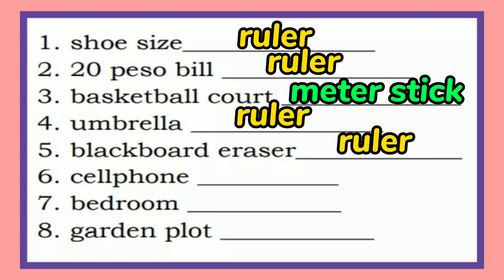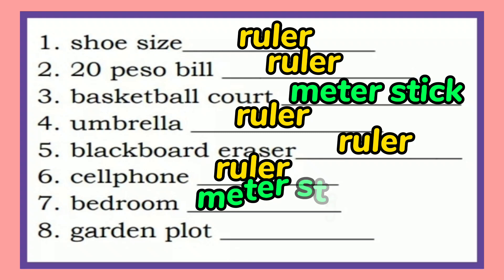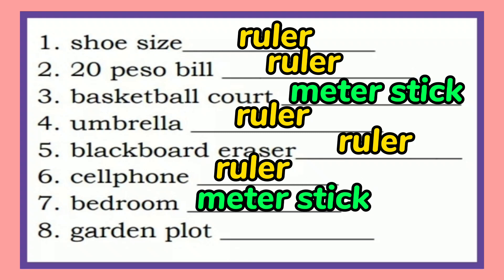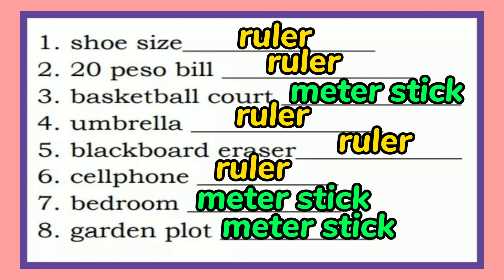For a cell phone, we will use a ruler. For a bed broom, we will use a meter stick. And for a garden plot, we will use a meter stick.